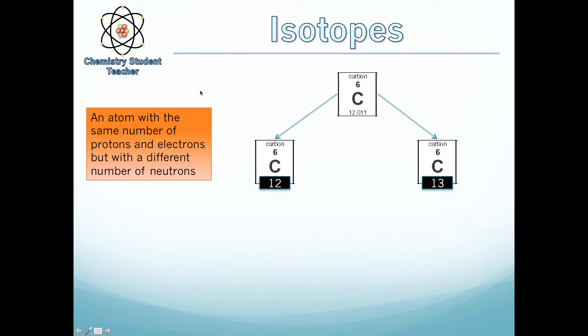Now if we look at isotopes: the definition of an isotope is an atom that has the same number of protons and electrons, but with a different number of neutrons.